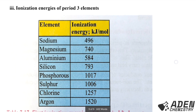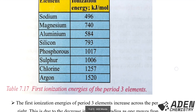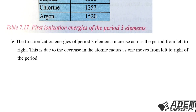Finally, the ionization energy of period 3 elements. Unlike the trend down a group — where ionization energy decreases due to increasing atomic size — ionization energy increases across a period. This is because the atomic radius decreases across a period. Therefore, the first ionization energy of period 3 elements increases from left to right, due to the decrease in atomic radius as one moves across the period. That's the end of the video, thank you.